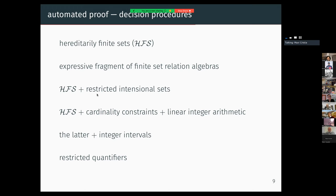It also implements a decision procedure for finite sets extended with restricted intensional sets, former notation. It also implements a decision procedure for the boolean algebra of finite sets plus cardinality constraints and linear integer arithmetic, and extends this latter decision procedure with integer intervals. Finally, it implements a decision procedure for restricted quantifiers, such as the foreach constraint that I just shown in the previous slides.